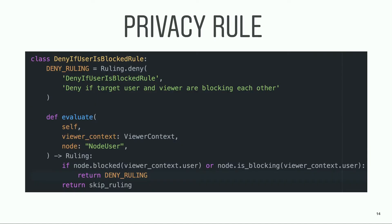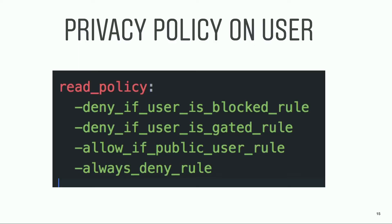Let's look at the implementation of one privacy rule — the deny-if-user-is-blocked rule. Similar to any privacy check, we need to know first who is the viewer (the viewer context) and what is the content (the node). The implementation is straightforward: we check if the user has blocked or been blocked by the viewer, and if so, we deny access; otherwise we continue evaluating the next scenario. Each privacy rule covers one scenario, and we group them into a privacy policy. This is a sample user policy with four rules evaluated in sequential order, where the first allow-or-deny decision is the final decision.